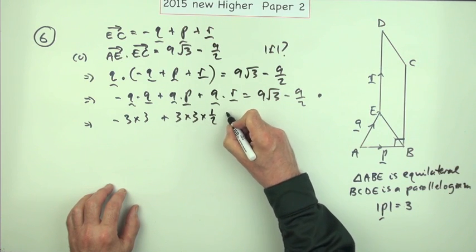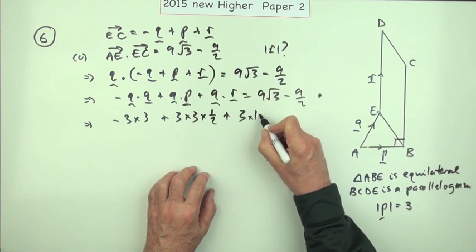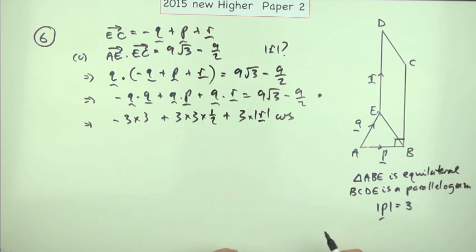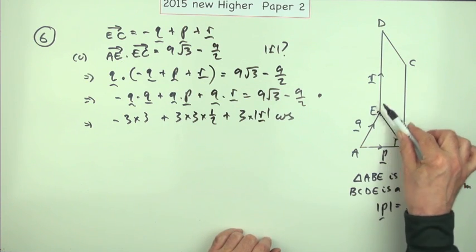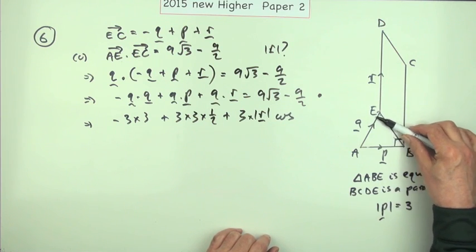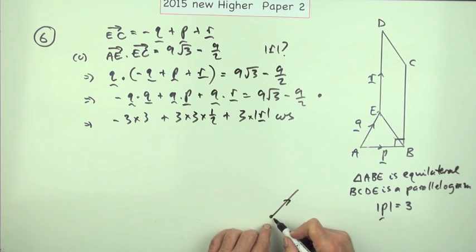q dot r, well q is 3 but I don't know what r is, times the cosine of, and this is the thing: what is the angle between q and r? What is the angle that's used? It's certainly not this one.